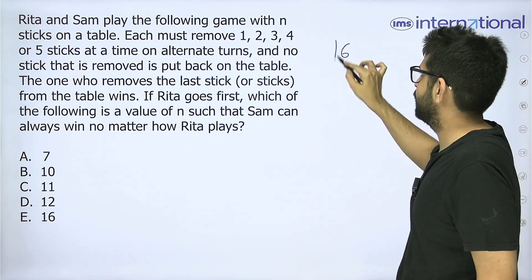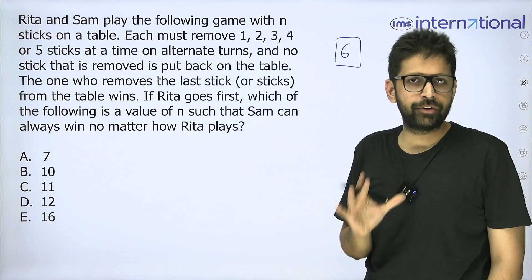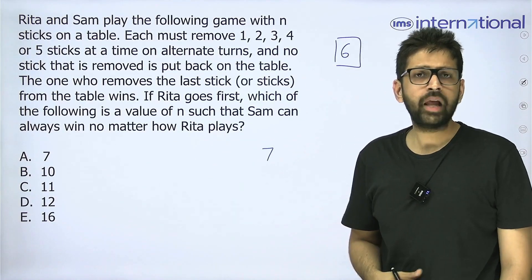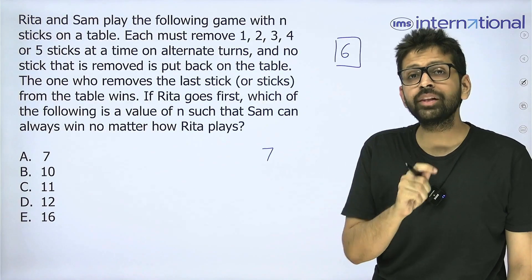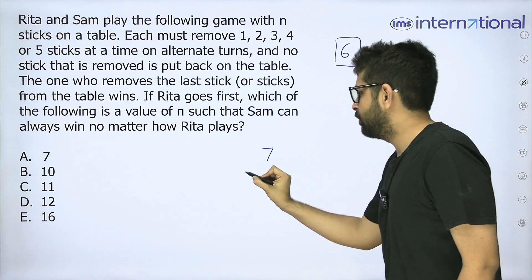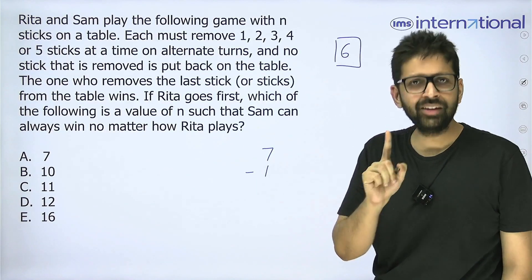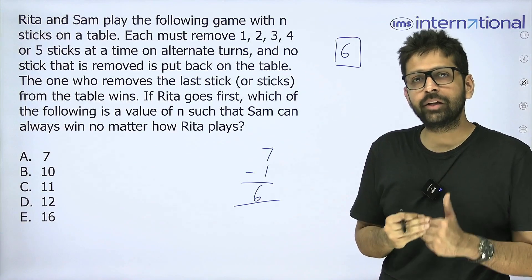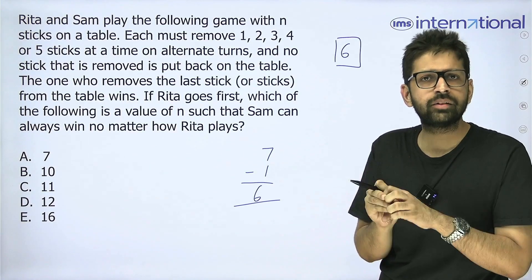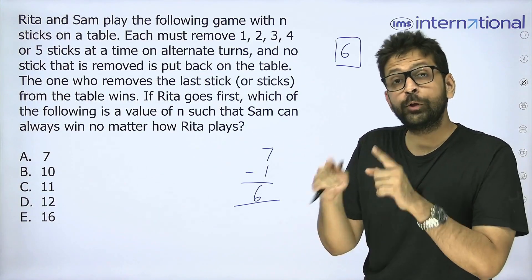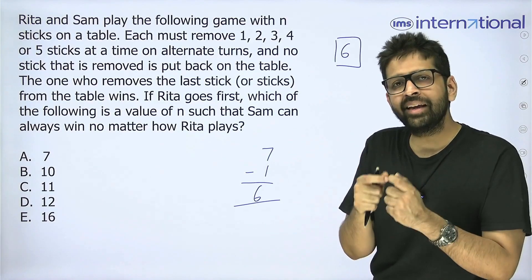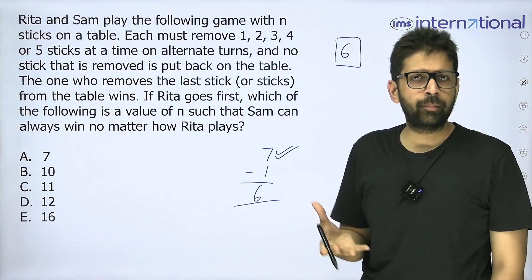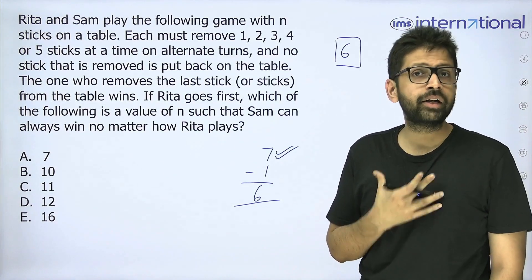Now let's imagine there are seven sticks and it is your turn to play — can you win? Yes, you can. You would pick just one stick and pass the chance to me. Now it is my turn and I see six sticks in front of me. No matter what I do, you use that logic and pick the remaining sticks to win. So seven is a very favorable number if it is your turn to play.